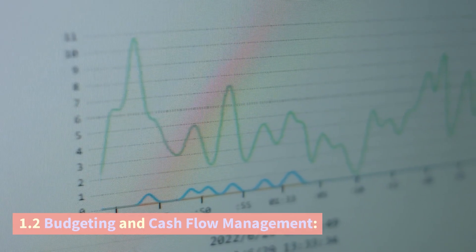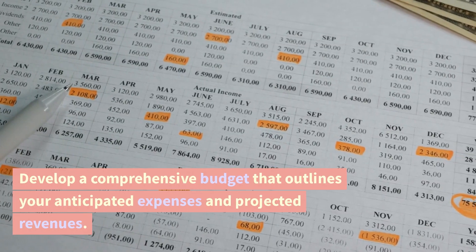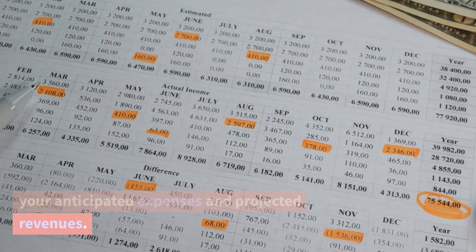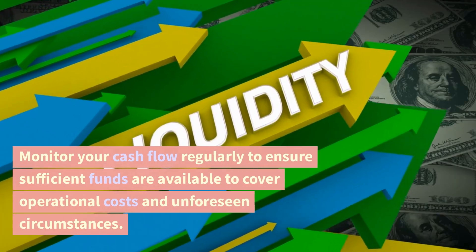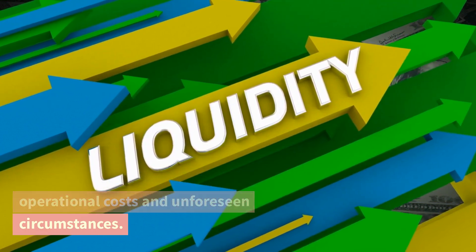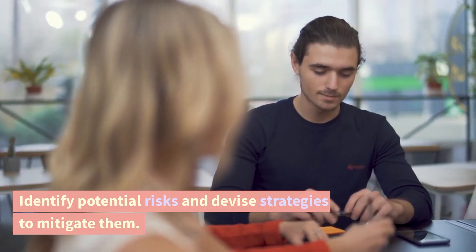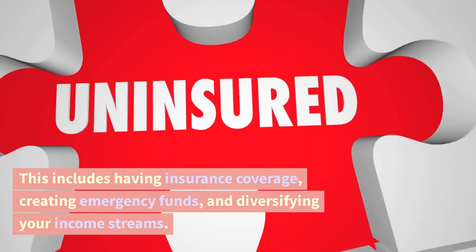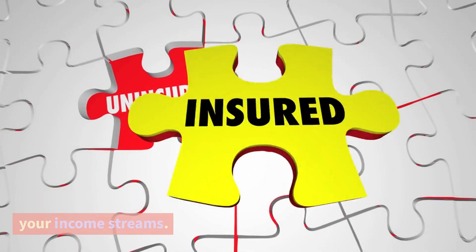1.2 Budgeting and Cash Flow Management: Develop a comprehensive budget that outlines your anticipated expenses and projected revenues. Monitor your cash flow regularly to ensure sufficient funds are available to cover operational costs and unforeseen circumstances. 1.3 Risk Management: Identify potential risks and devise strategies to mitigate them. This includes having insurance coverage, creating emergency funds, and diversifying your income streams.